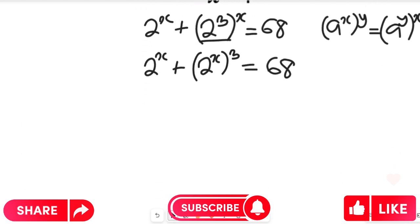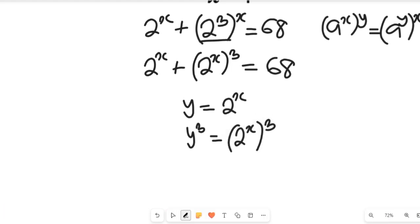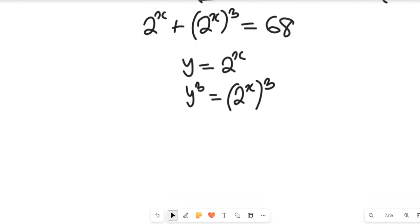So now let's assume that y is equal to 2 to the power of x. If y is equal to 2 to the power of x, that means y to the power of 3 can also be equal to 2 to the power of x, all to the exponent of 3. We are going to replace the expression, giving us y plus y to the power of 3, and that will be equal to 68.